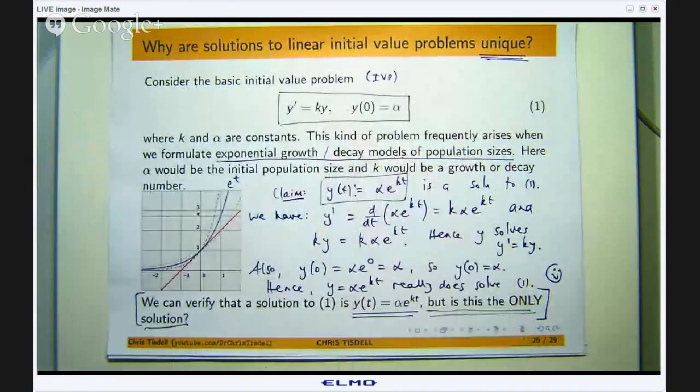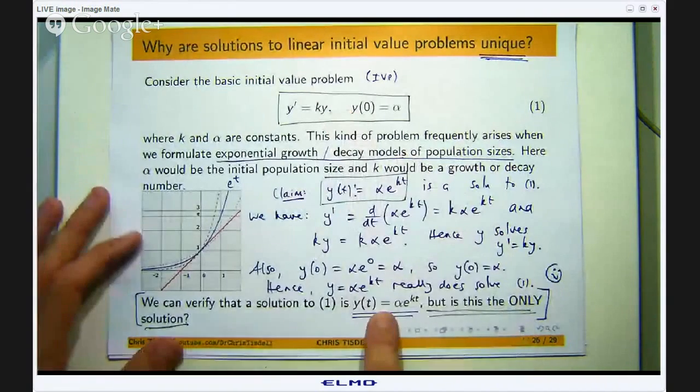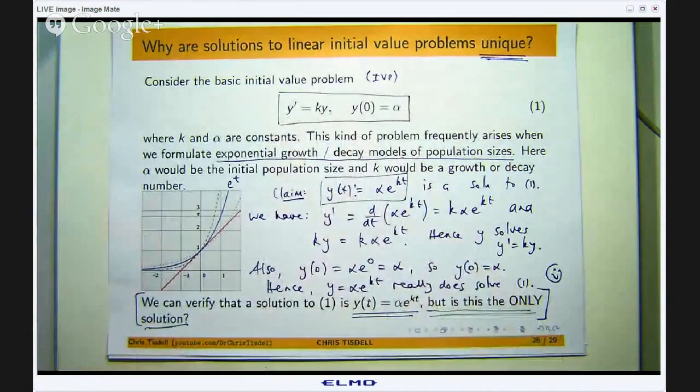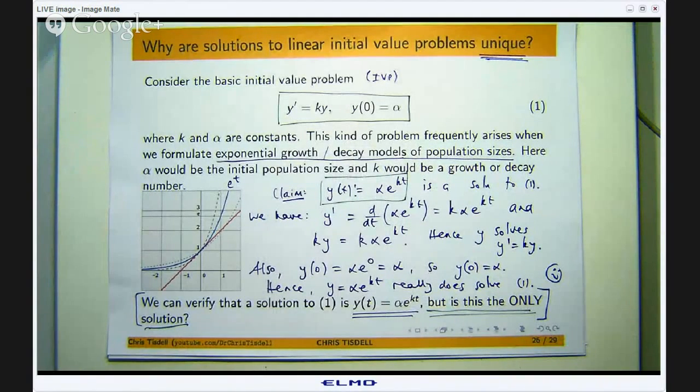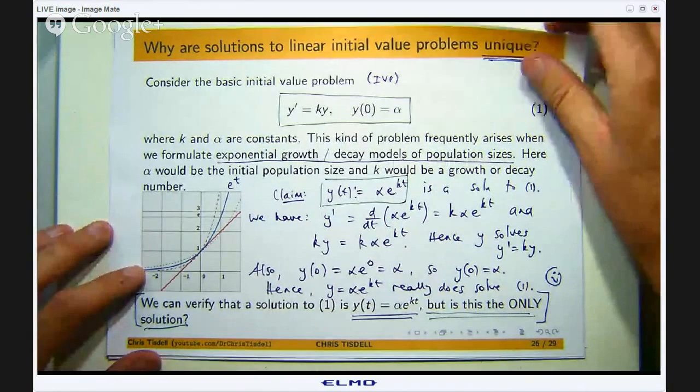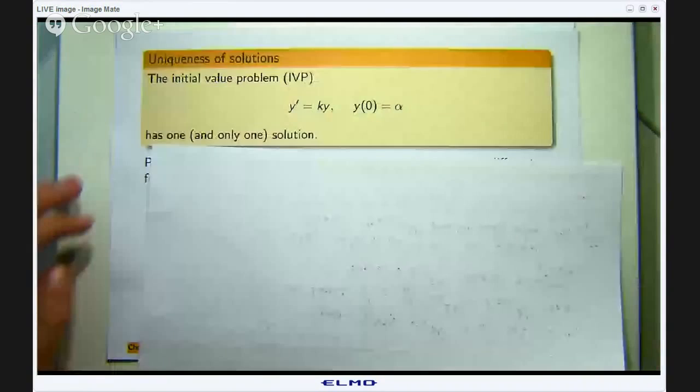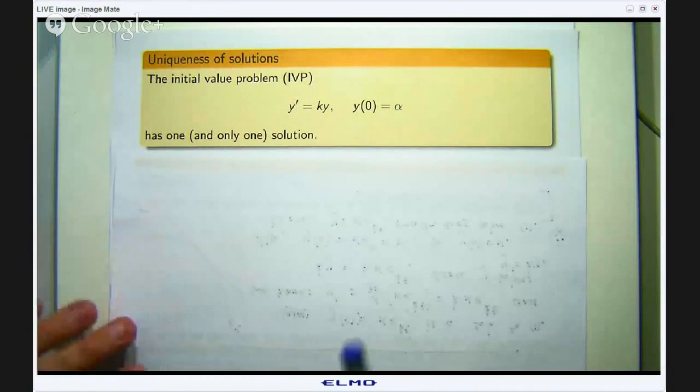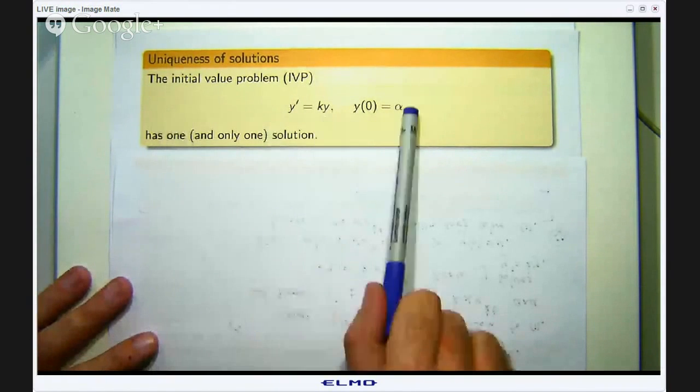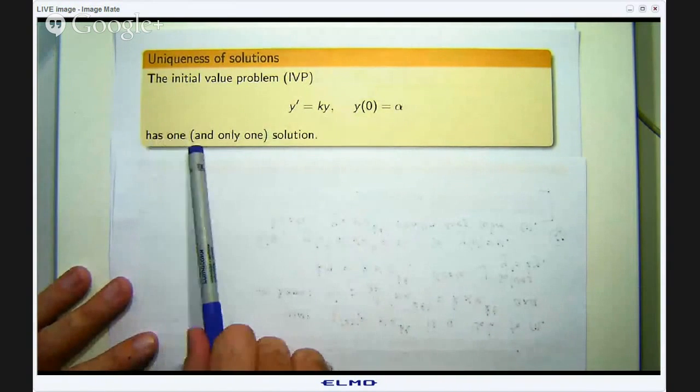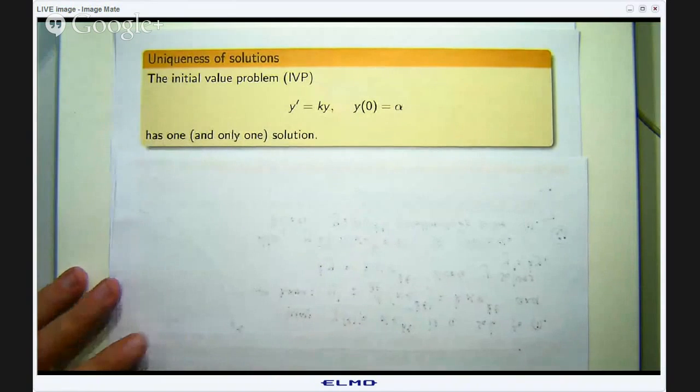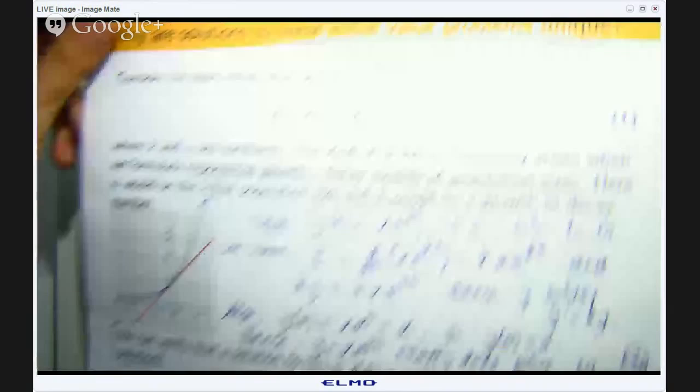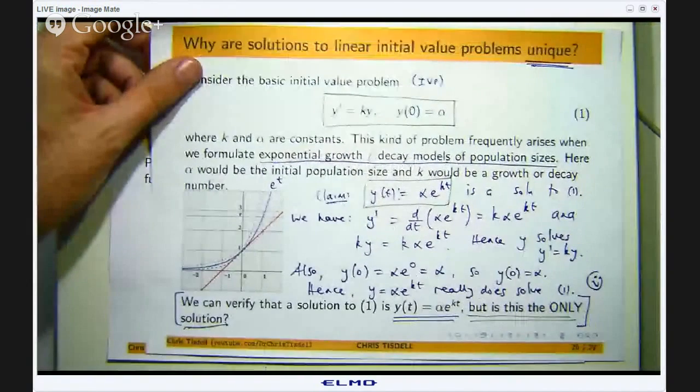But let me ask the question again. Is this the only solution to the initial value problem? That is a very deep question. So let me present the following theorem. The initial value problem has one and only one solution, and the solution is given by y = αe^(kt).